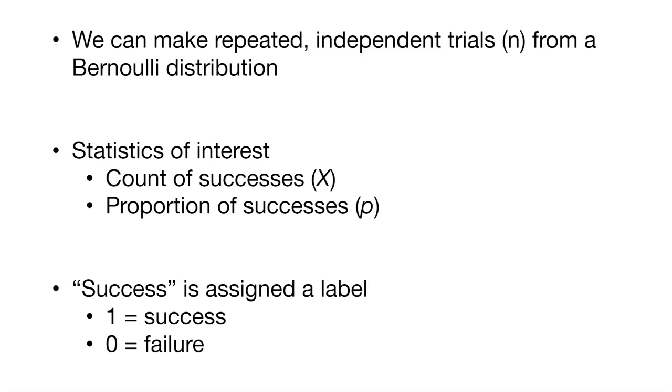What we might want to know is how many successes do we have, X—how many trees do we encounter that are alive? And what's the proportion of those successes, p? Maybe 60% of the trees we counted are alive.